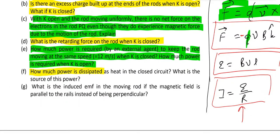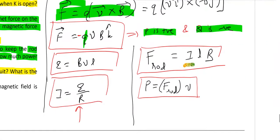How much power is dissipated as heat in closed circuit? What is the source of this power? So to calculate the dissipated power, power dissipated, you can use formula I squared R. Resistance is given so you can calculate. And this power comes from the mechanical force which we are providing to move the rod. So actually mechanical energy is converted into heat energy.